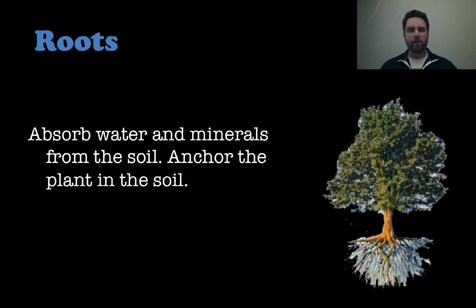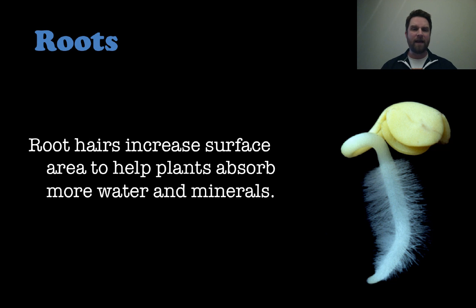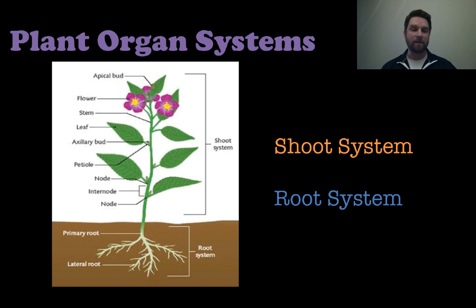The roots are really important as well because they absorb water and minerals from the soil and they anchor the plant into the soil. The way they absorb things more easily is they have all these tiny little hairs on the surface of the root that increase surface area so that absorption can happen better — think of them like the microvilli and villi in the small intestine.